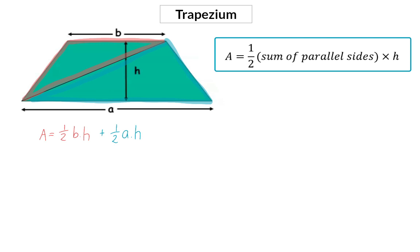With a bit of algebra, we can now take out a common factor, and that factor is the half and the height. Then we'll be left over with the B and A, which is A plus B. So again, here we have a half times the sum of the parallel sides multiplied by the height.